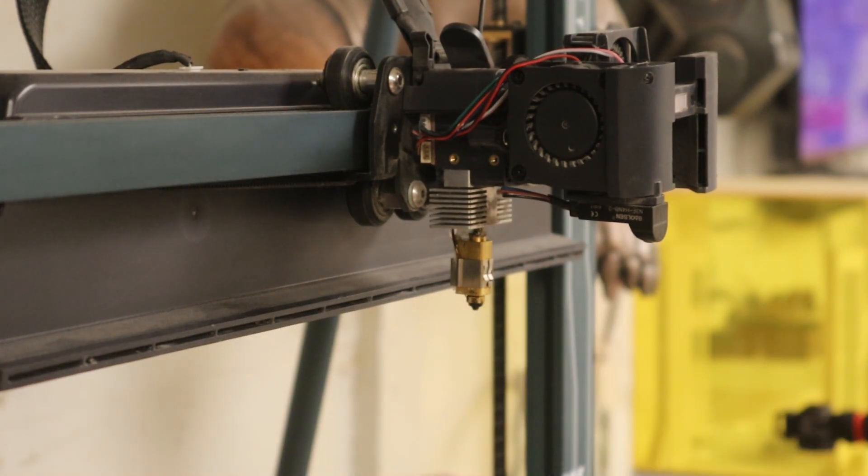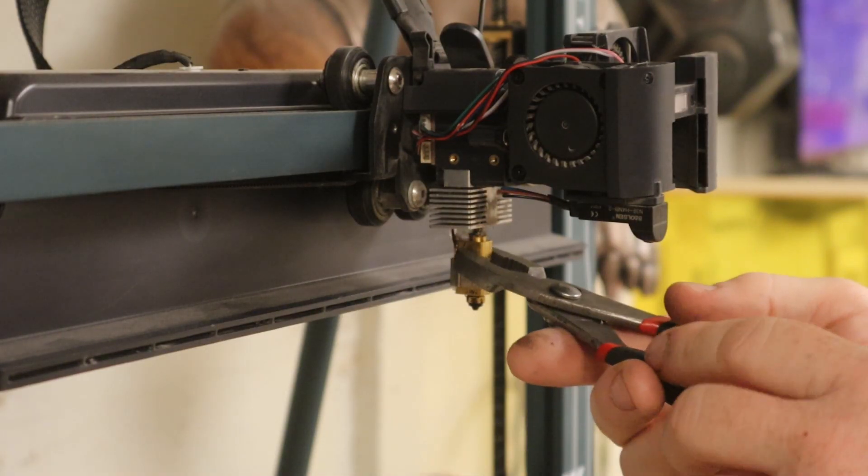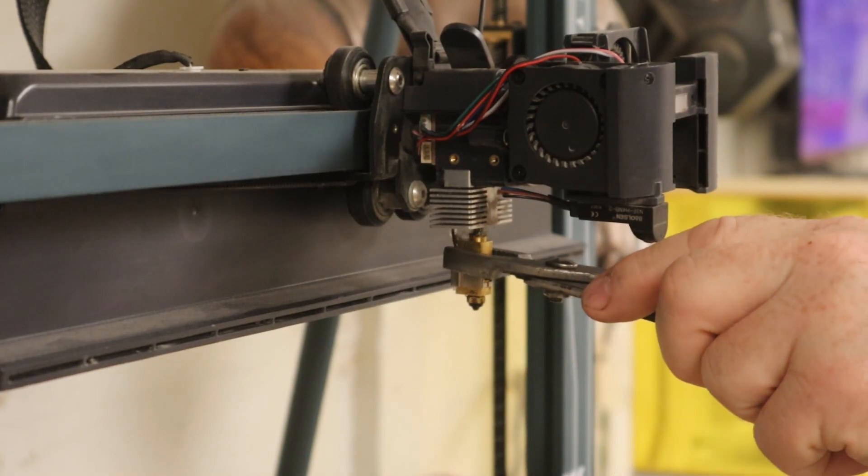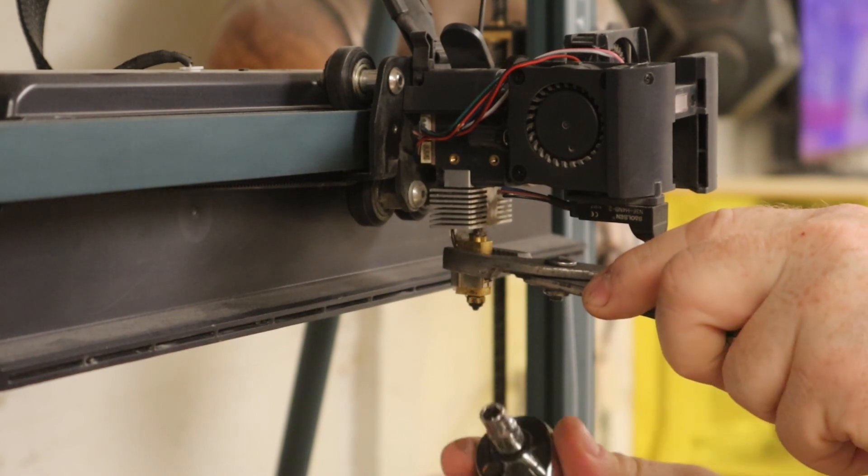Before you go to turn this nozzle out, get a pair of pliers and hold on to the hot end up here. If you don't, you run the risk that you can twist this and actually break it off.